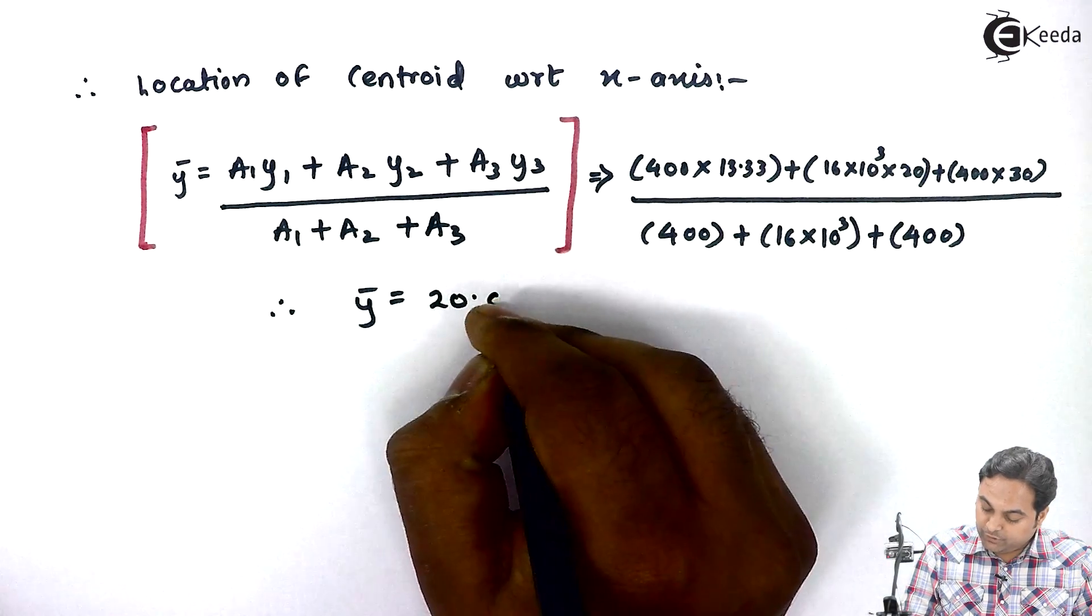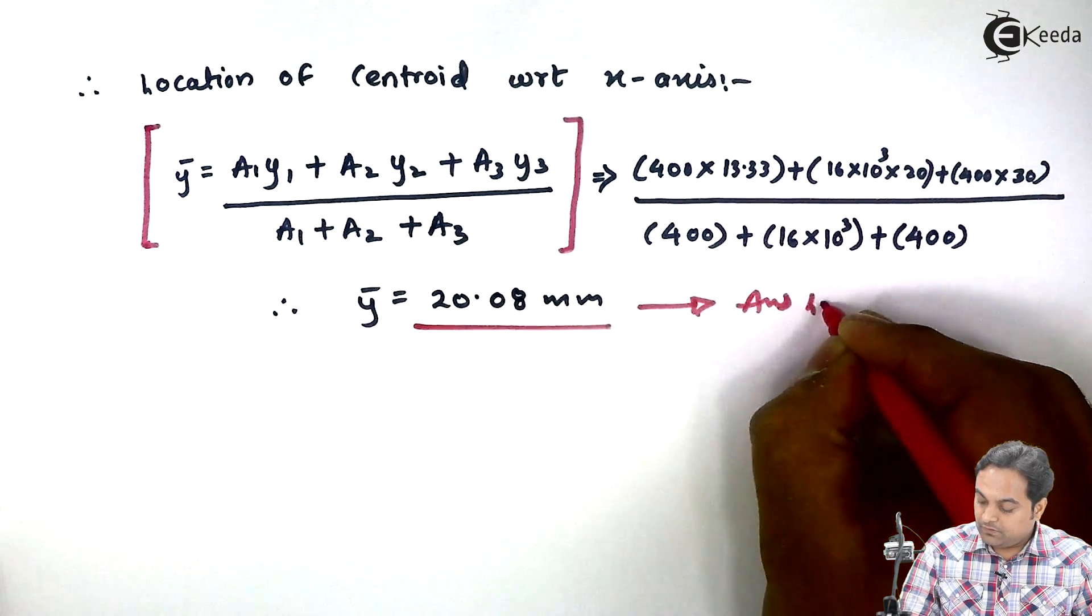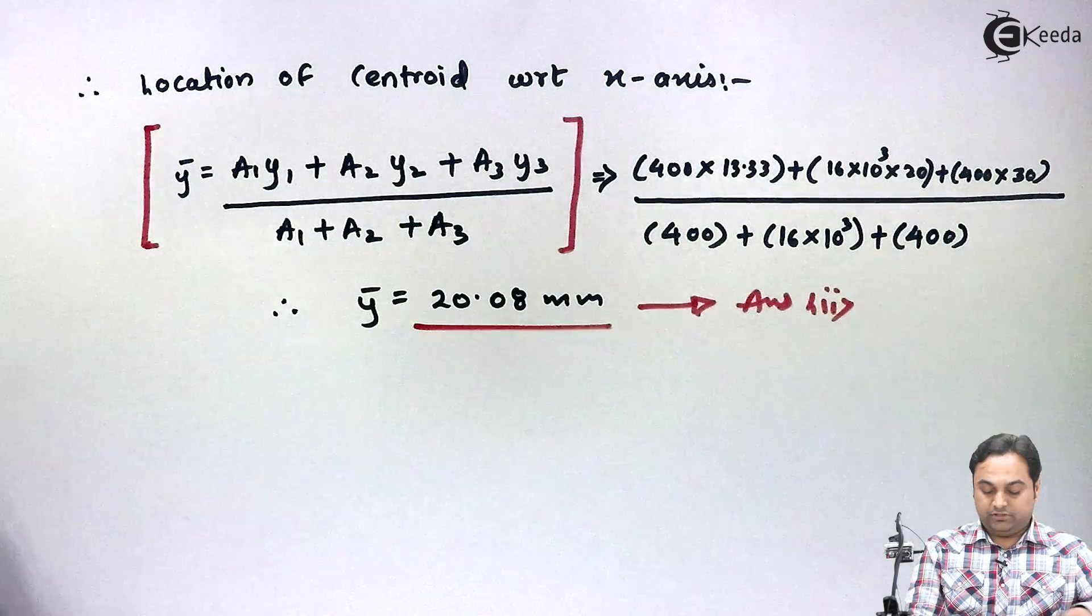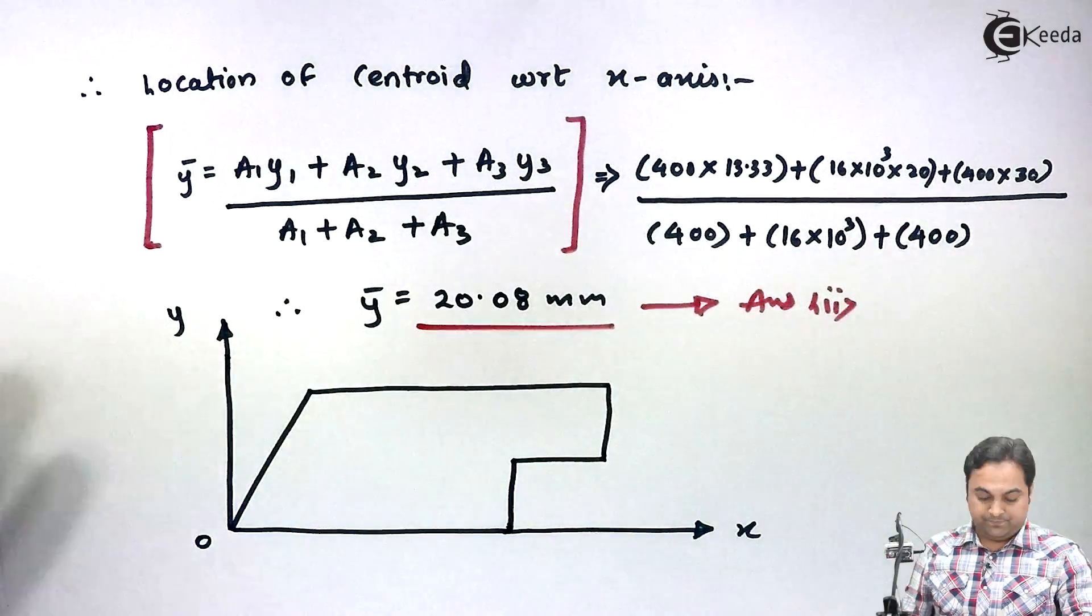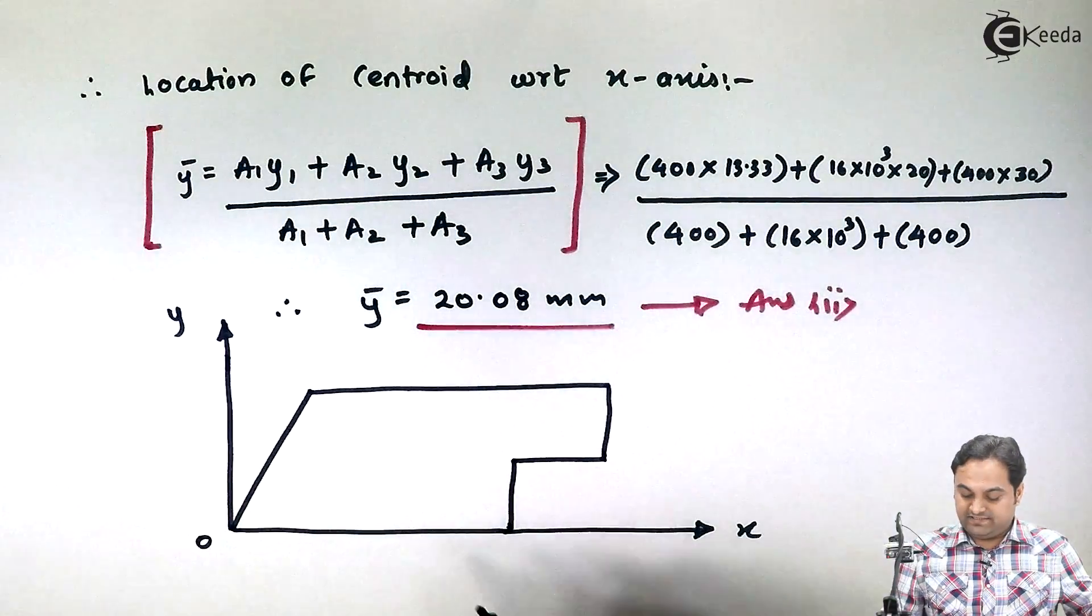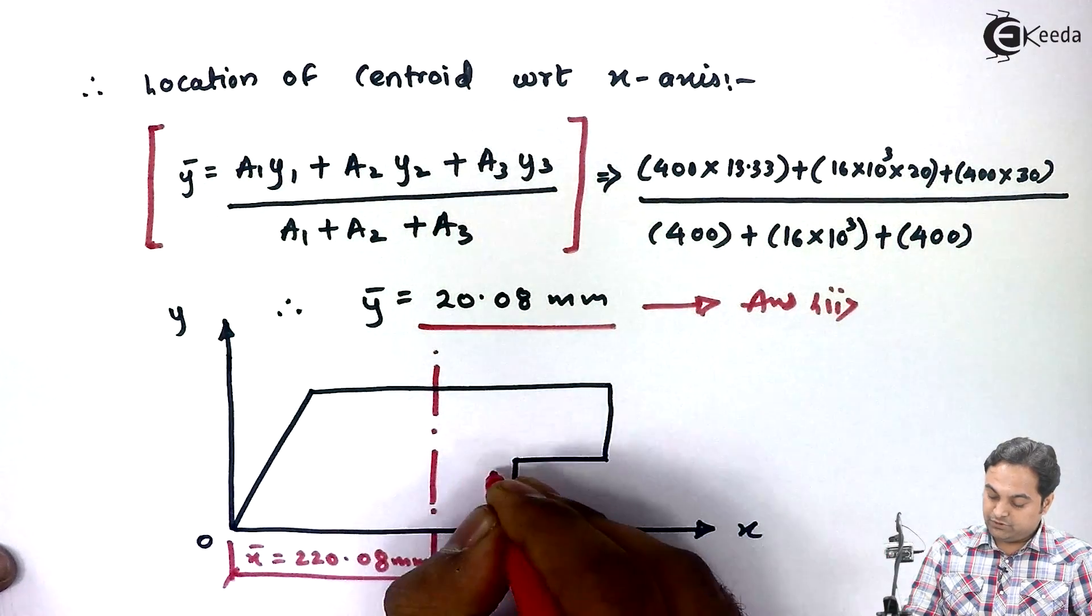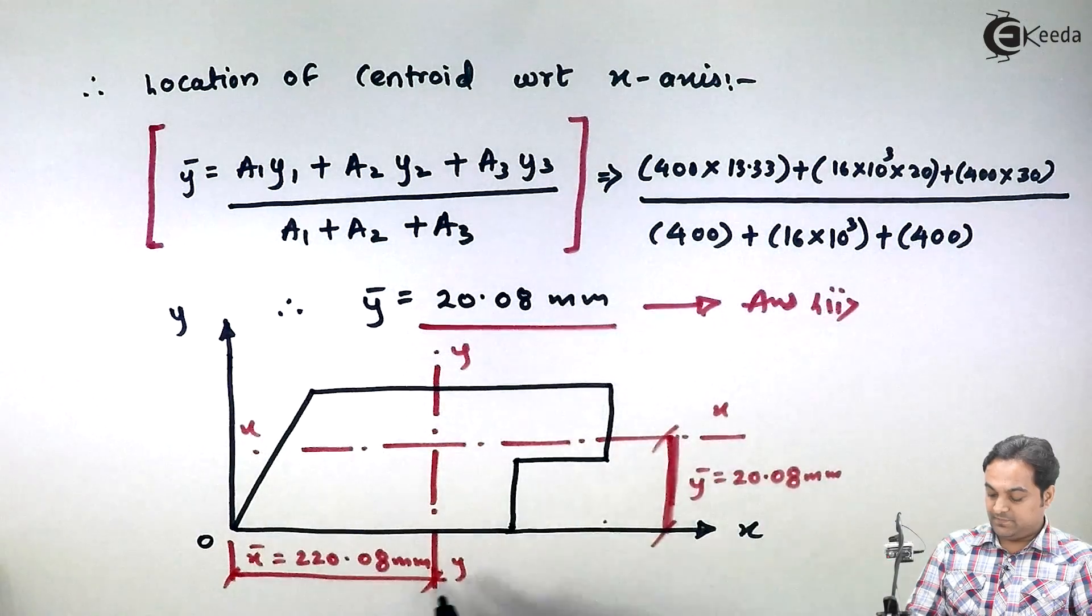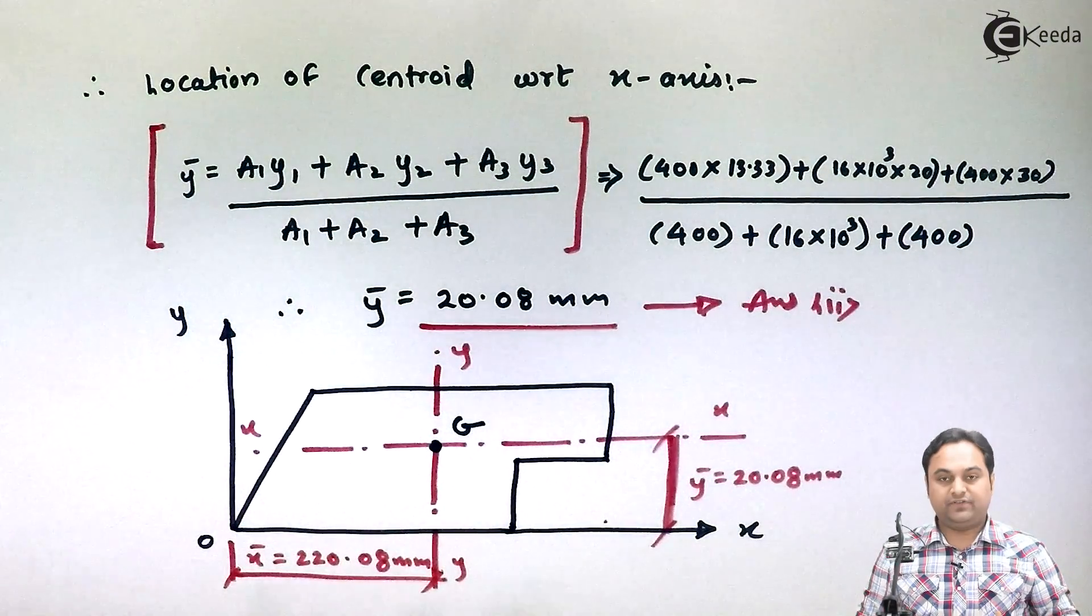So from the calculation part I am getting this answer which is my second answer. Now once I have got x bar and y bar, I can easily show it onto the diagram - the cutout section which was given. x bar value we have calculated was 220.08 mm, so this x bar is the distance of y axis. y bar is 20.08, so this much distance, just above this. So once we have got x bar and y bar, that is location of x-axis and y axis, their intersection will give us the centroid, and hence with the location of centroid we complete this problem.